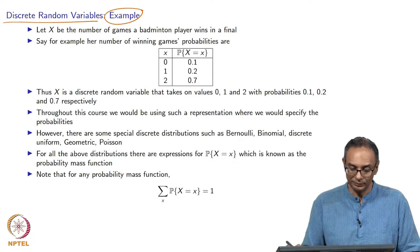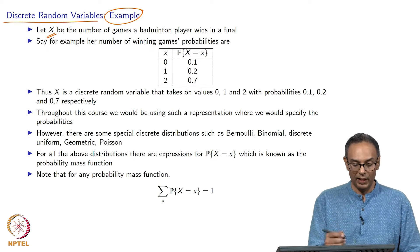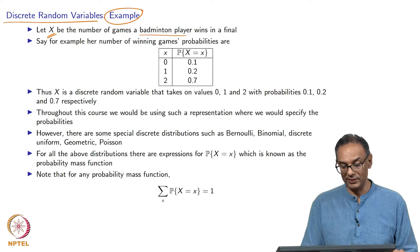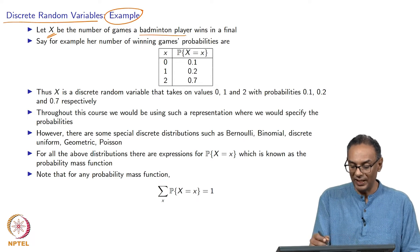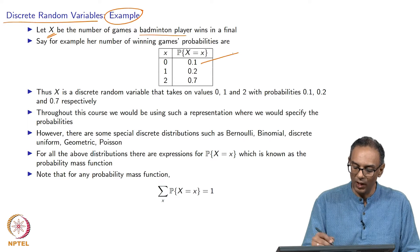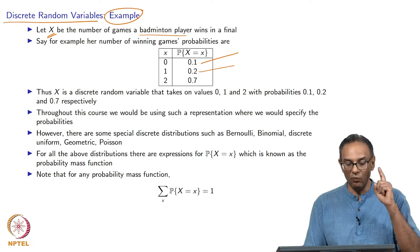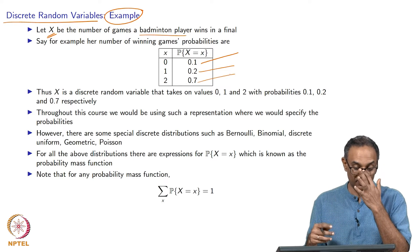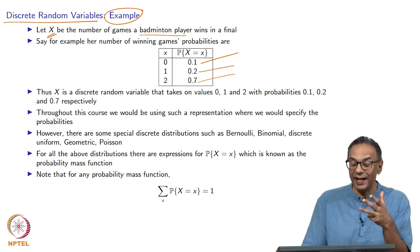I am taking an example. I am going to let x — a random variable — be the number of games a particular badminton player wins. Let's think of a woman badminton player who plays a lot in a final. Let's say she has these probabilities: with probability 0.1 she will win exactly 0 games, with probability 0.2 she will win 1 game, and with probability 0.7 she will win 2 games. Remember that it is a best of 3, so if she wins 2 games she has won the final and would never have to win more than 2 games.